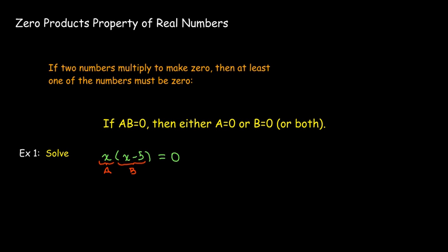Either x equals zero or x minus 5 equals zero. And x equals zero is already solved. And it's easy to solve x minus 5 equals zero. So my two solutions are x equals zero or x equals 5. So my solution set, in this case, has two numbers, zero and five.